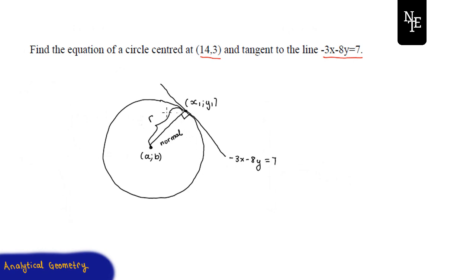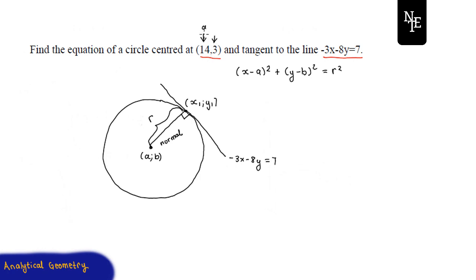Once we have that distance squared, we can substitute into (x - a)² + (y - b)² = r². We don't have to worry about finding the values of a and b because those are given in the center — a is 14 and b is 3. So our only task is to find this point of tangency.